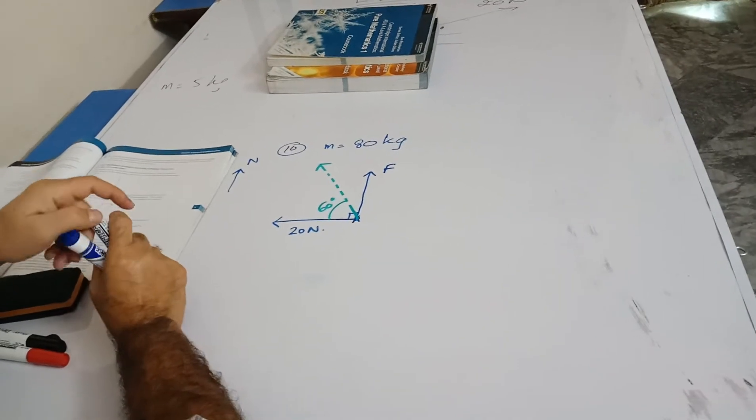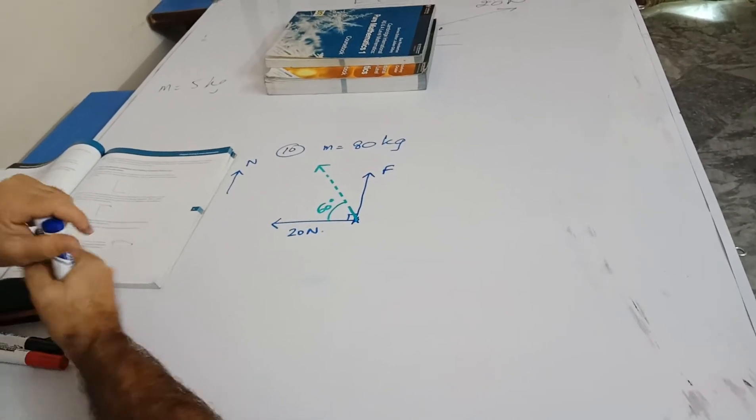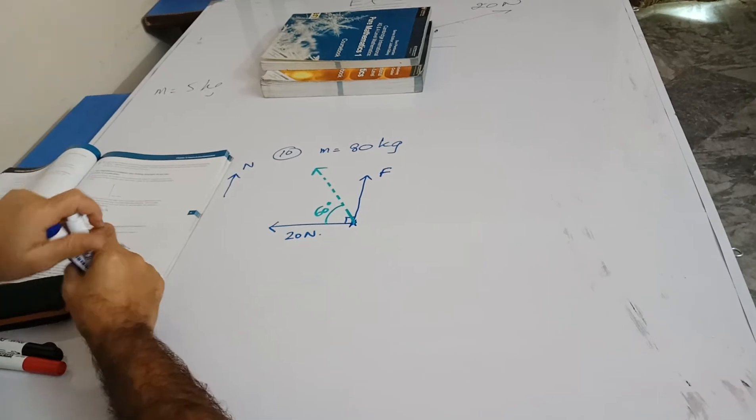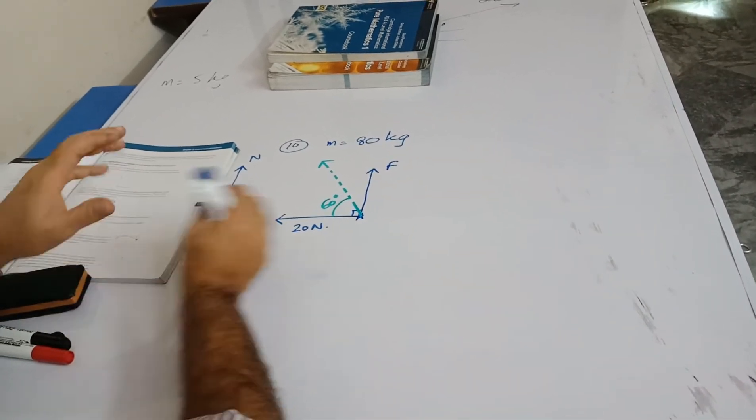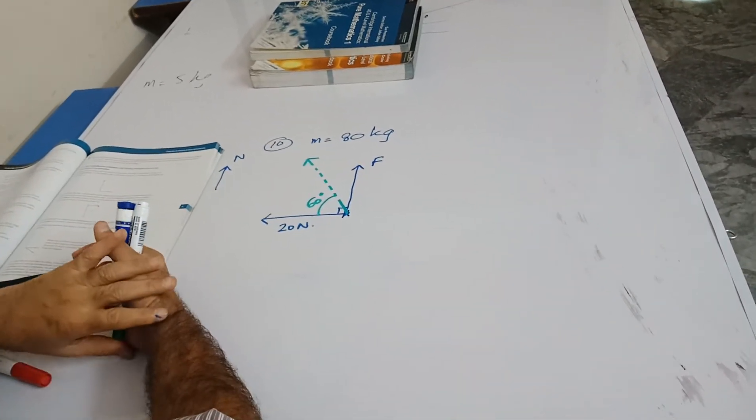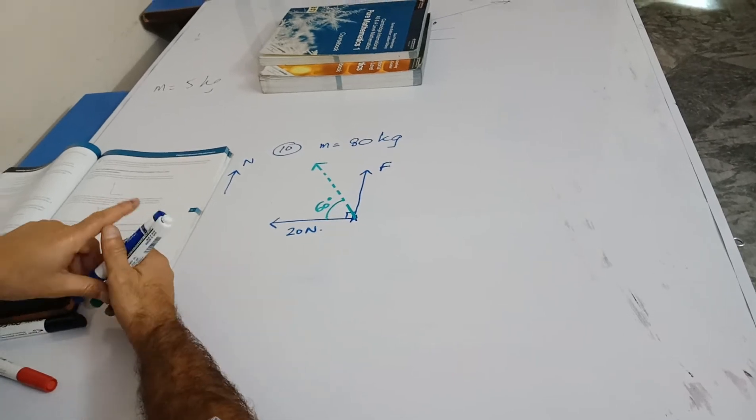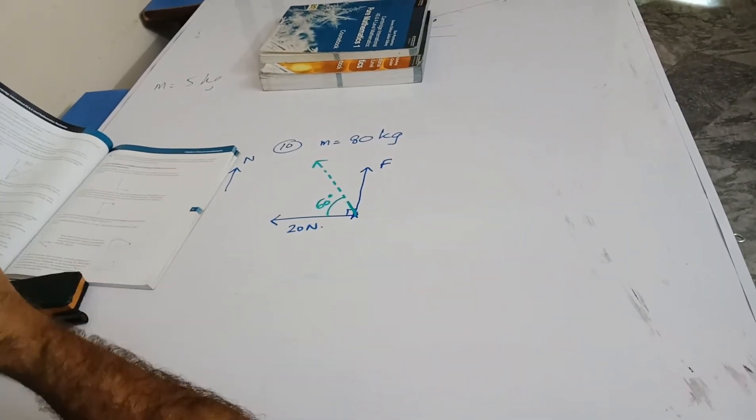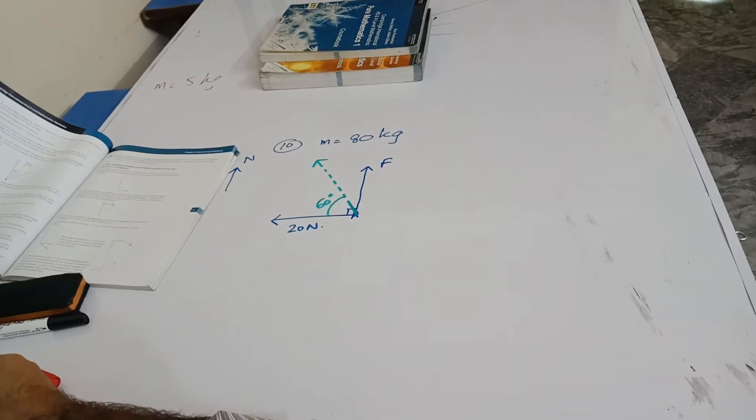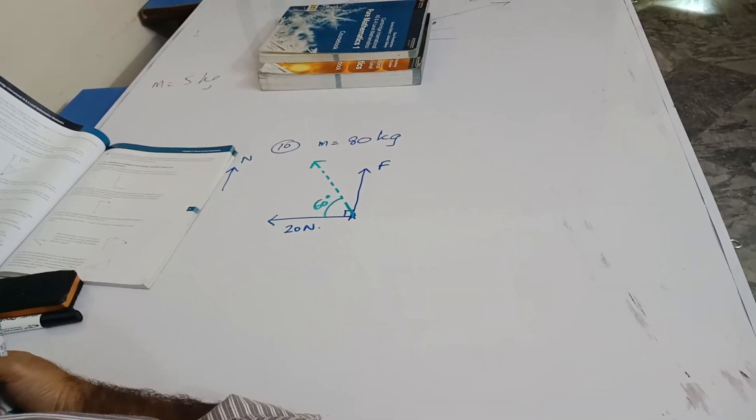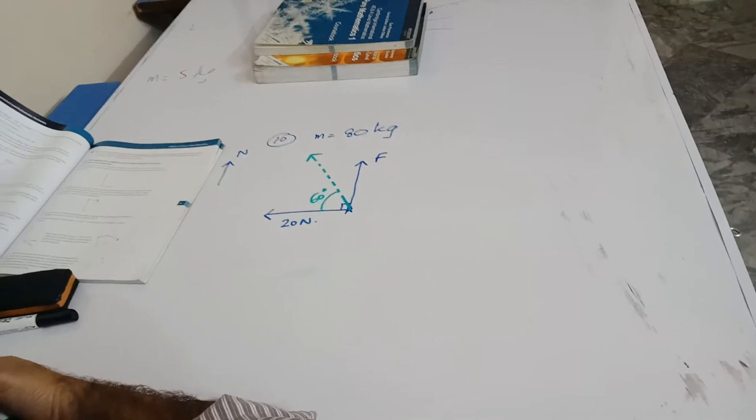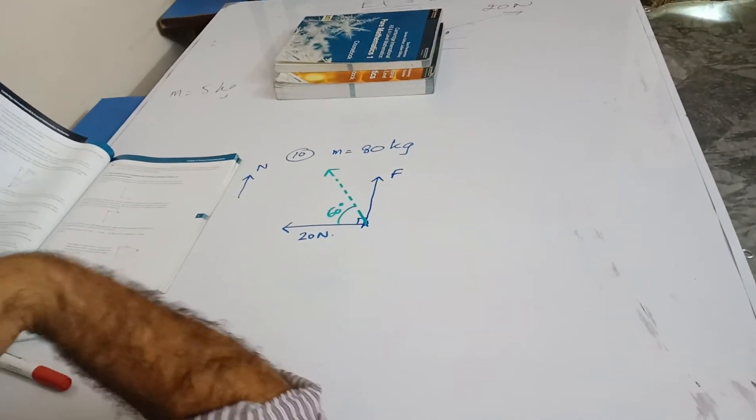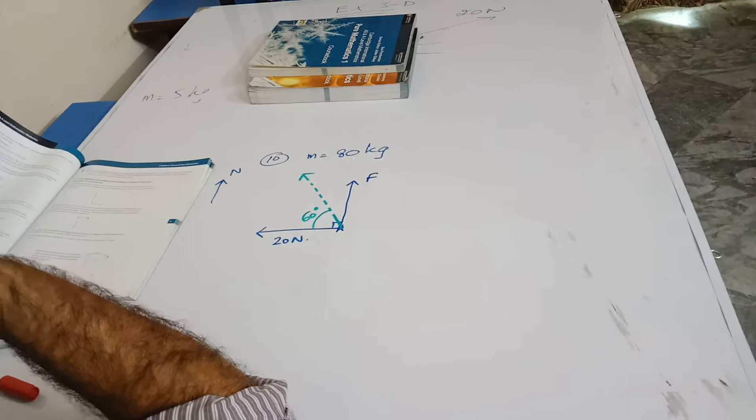Hey, welcome back my students. I'll be doing two more questions from this exercise and the rest are the same. You can try them yourself. Question number 10 is here. It says a windsurfer and his board have a total mass of 80 kg. I have written down the mass here.